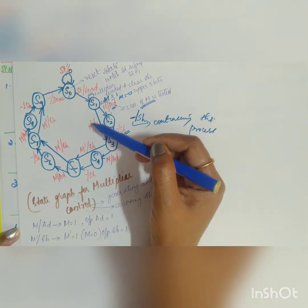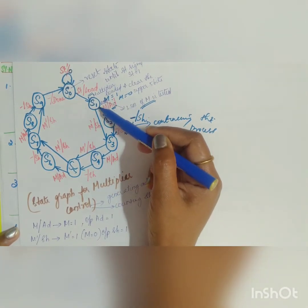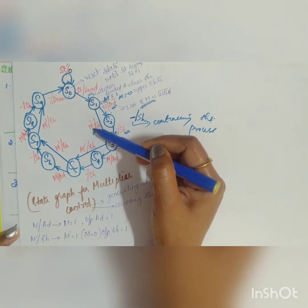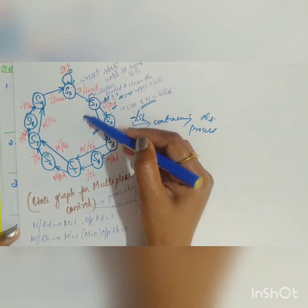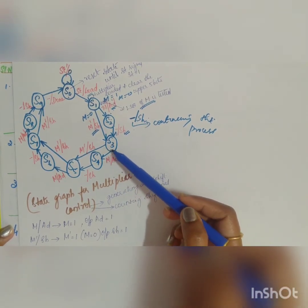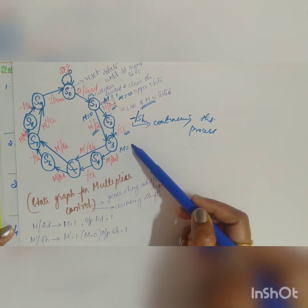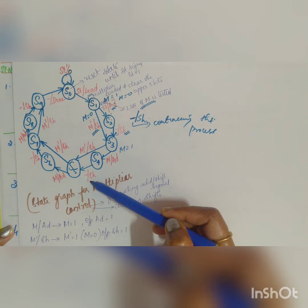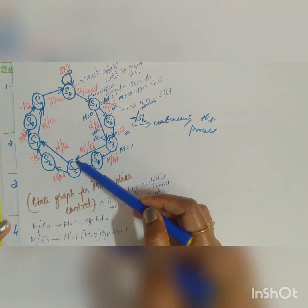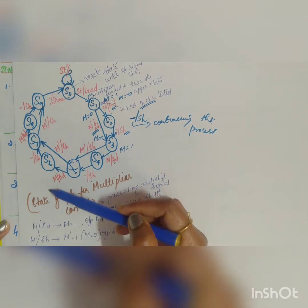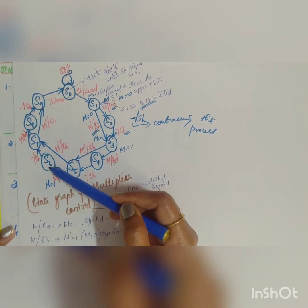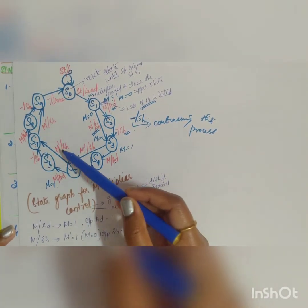In state S1, if m = 1, the add signal is issued and the machine goes to state S2; on the next clock, the shift signal is issued and it moves to S3. If m = 0, the add is skipped and the machine goes directly to the shift state. From S3, the next LSB is tested again: if m = 1, add and shift move through states S4 and S5; if m = 0, it goes directly to S5.